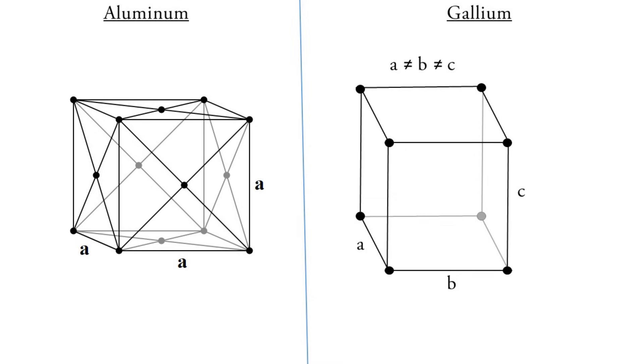In aluminum, the atoms are arranged in such a way that the atoms are very close to each other and so they can easily bond with each other. But in gallium, it kind of has a weird structure. It's not like the normal lattice structures of metals. It's called orthorhombic. And no side of the cube is the same as the others. So A does not equal B does not equal C.